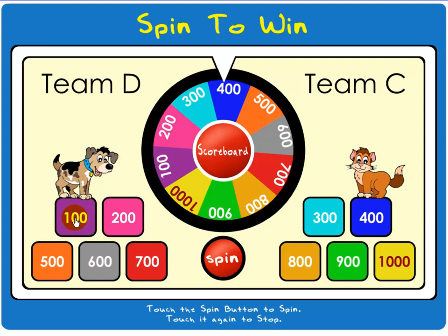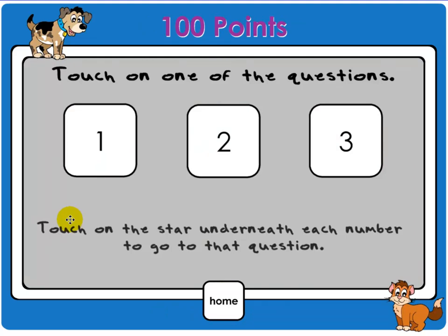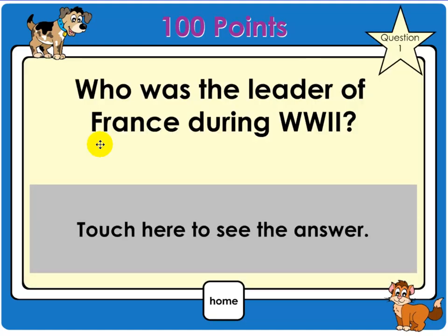So, I touch on the 100 color block and now students have a selection between questions 1, 2, and 3. In this case, the students would touch on one of the questions and then touch on the star to go to that question. Here's the question we already created.